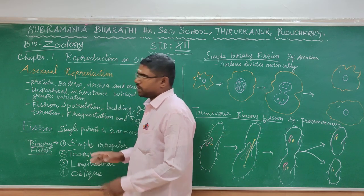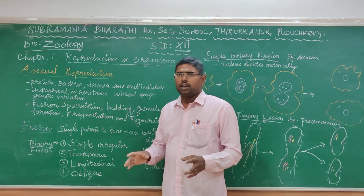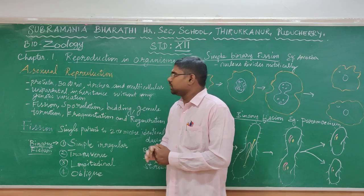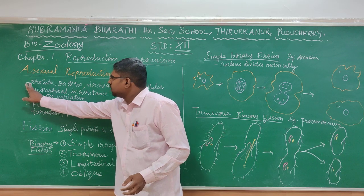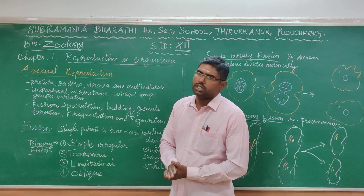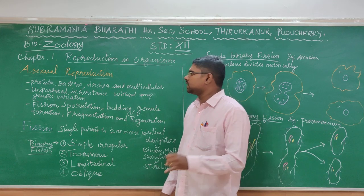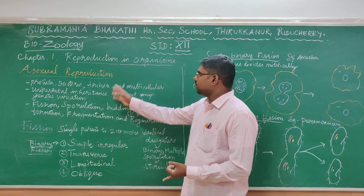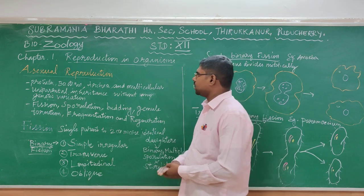Asexual Reproduction occurs in major organisms — many numbers of organisms. That means invertebrates. They are under Protista. Protista are protozoan organisms, meaning single-celled organisms. Likewise, bacteria also have a single cell. And then Archaea — that group of organisms also have a single cell.